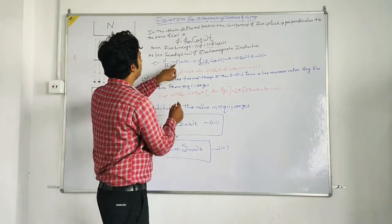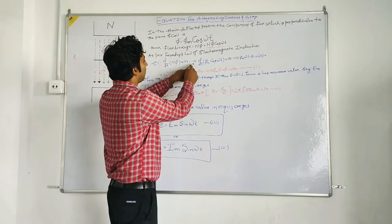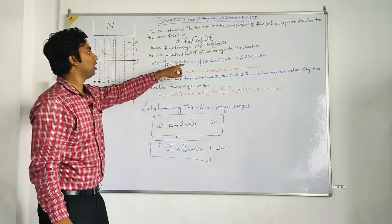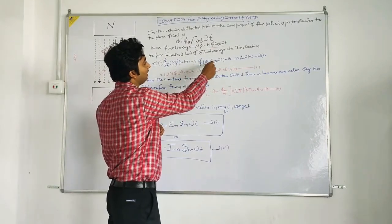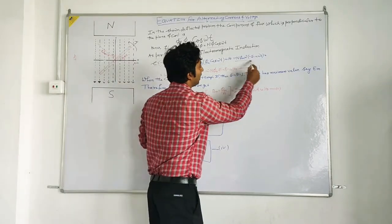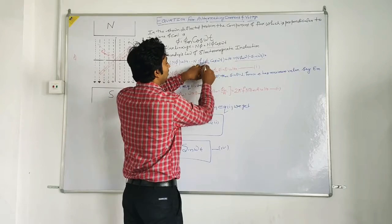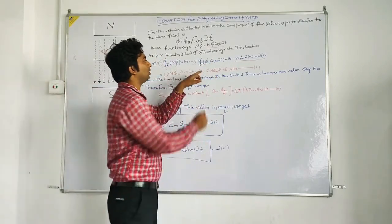So now if we put the value of phi from the above equation we will get minus n as n is a constant. So we can take it out from the derivation. So n d phi by dt phi m cos omega t. Now n phi m is a constant, maximum flux phi m stands for maximum flux. So it is a constant. So we will take it out as constant.